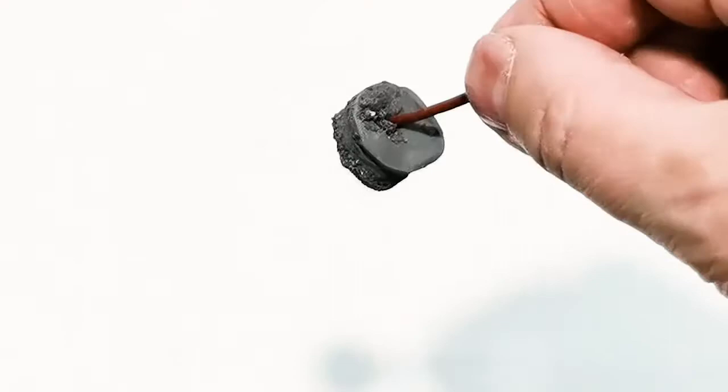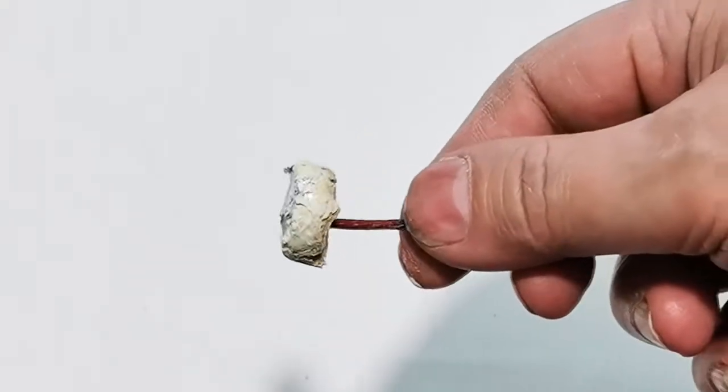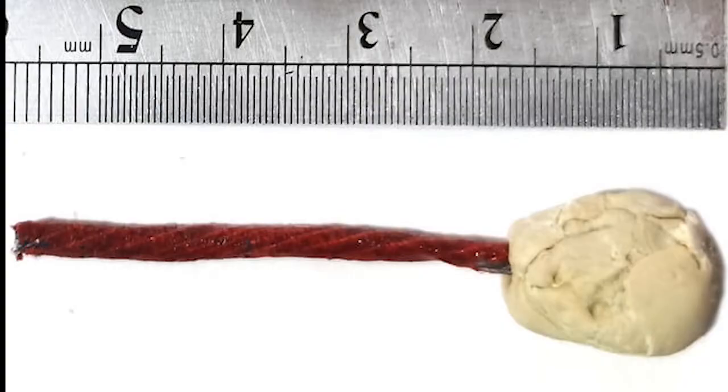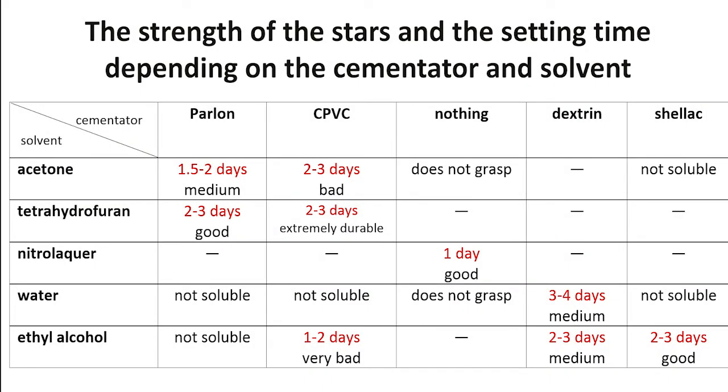Since I light the stars on earth, I immediately insert the wicks. Tetrahydrofuran is better not to use - the stars are extremely durable and prone to explosion. I made this table as a result of experiments; it may be different for you.